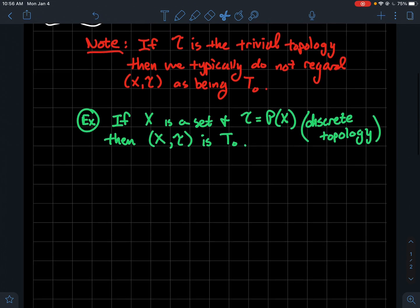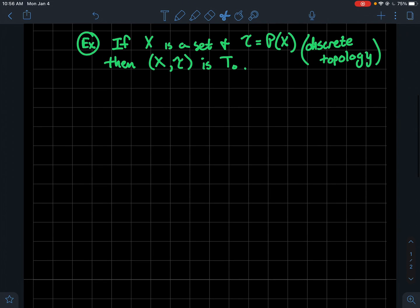So the first example, kind of one extreme: what if you had any set X and what if τ is the discrete topology? Remember that just means that the topology is actually the power set of X, meaning that we're going to label all subsets of X as open. In that case then, (X,τ) is a T₀ space.